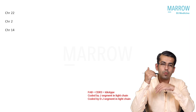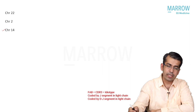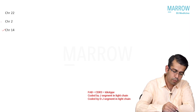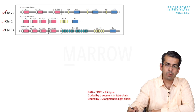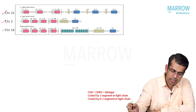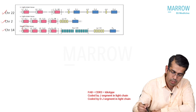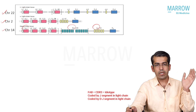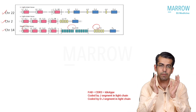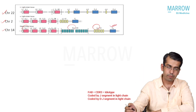Looking at the chromosomal locations: chromosome 14 has the IgH (heavy chain) region, chromosome 2 has the kappa light chain, and chromosome 22 has the lambda light chain. The heavy chain locus has three variable segments coded V, D, and J, which together make the variable portion of the heavy chain, while C makes the constant portion.